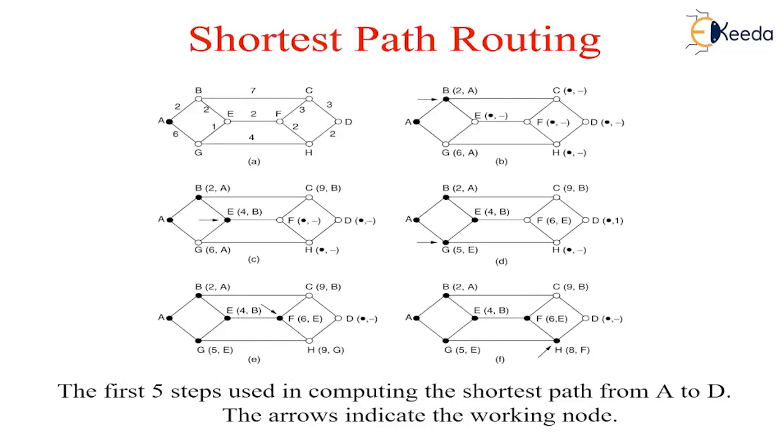One way of measuring path length is the number of hops. Using this metric, the paths ABC and ABE in the figure are equally long. Another metric is the geographic distance in kilometers, in which ABC is clearly much longer than the ABE path. However, many other metrics besides hops and physical distance are also possible. For example, each arc could be labeled with mean queuing and transmission delay. With this graph labeling, the shortest path is the fastest path rather than the path with the fewest arcs or kilometers.